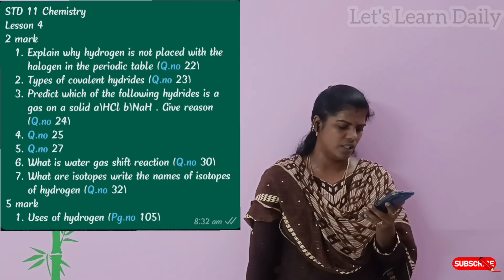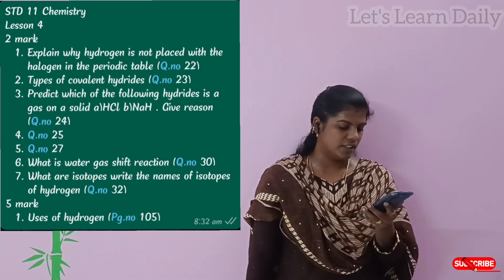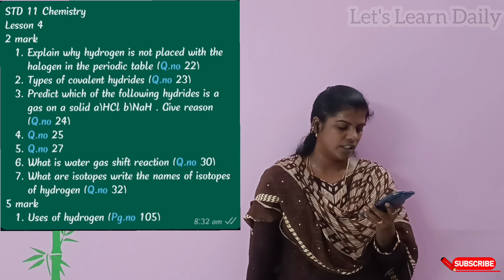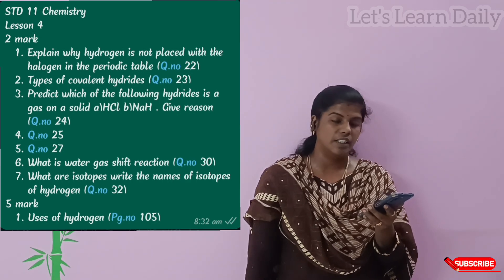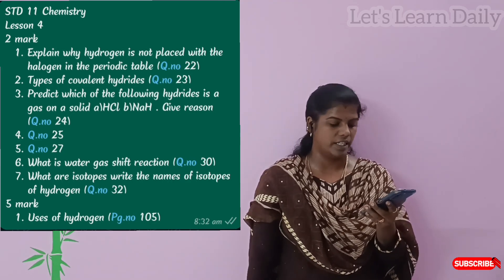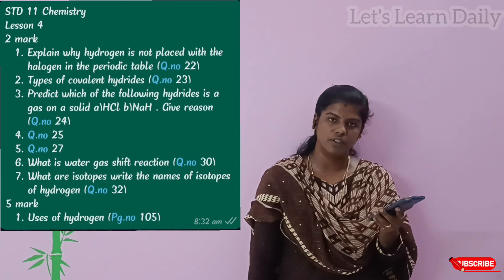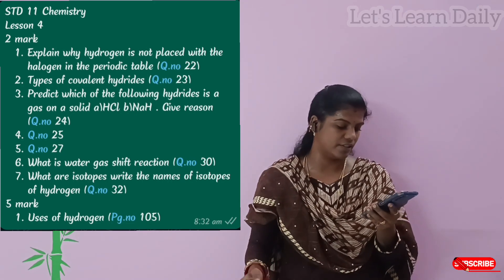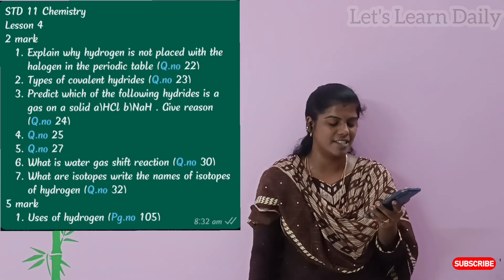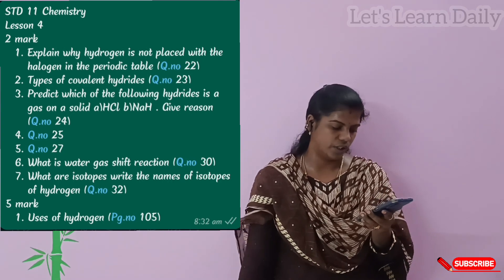Question 30 is: what is the water gas shift reaction? That is the most important question. Question 32: what are the isotopes? Write the names of the isotopes of hydrogen. That is the most important question — it is easy, and you can learn it in other classes.